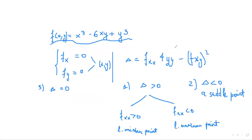If you are given a function of two variables, let's say u equals f(x, y), we are going to first find the critical points — also called stationary points — by finding the first-order partial derivatives with respect to x and with respect to y, and setting them equal to zero. So f_x equals zero and f_y equals zero. From here we can get one or several equations.